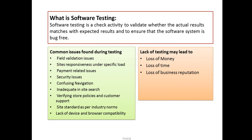Verifying store policies and customer support: if your website is an e-commerce site, you need to check whether a customer who has purchased something is able to get proper customer support, and this should be clearly visible on the front page. Site standard as per industry norms means there are specific standards for different domains — for e-commerce, there should be a customer support number on top, contact us details, and other required elements in the correct format.